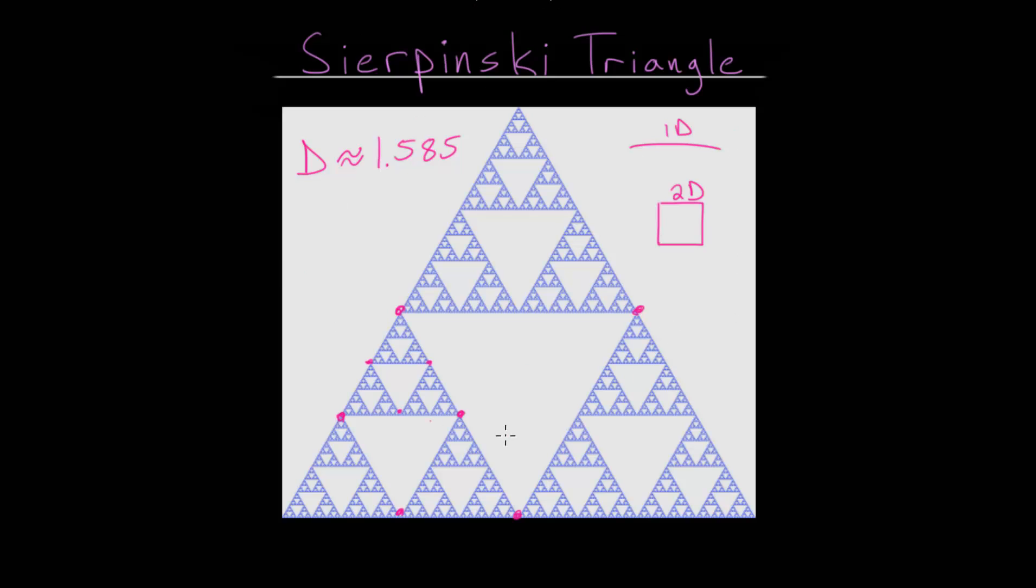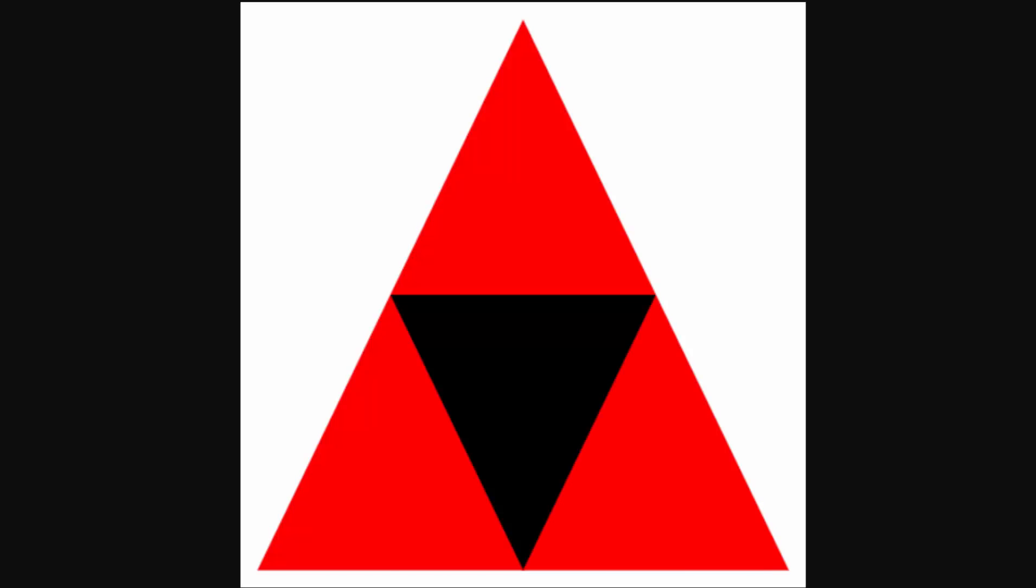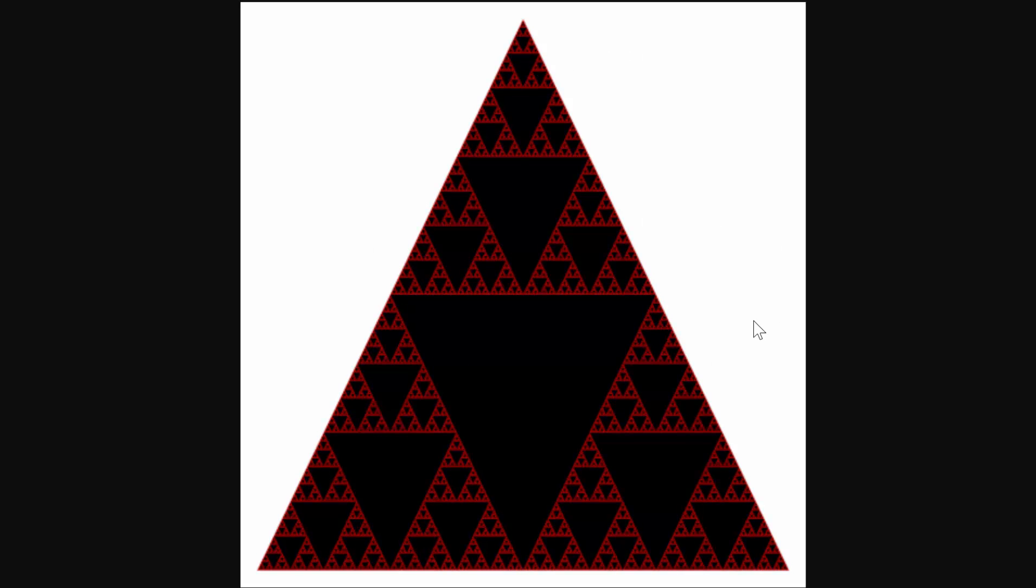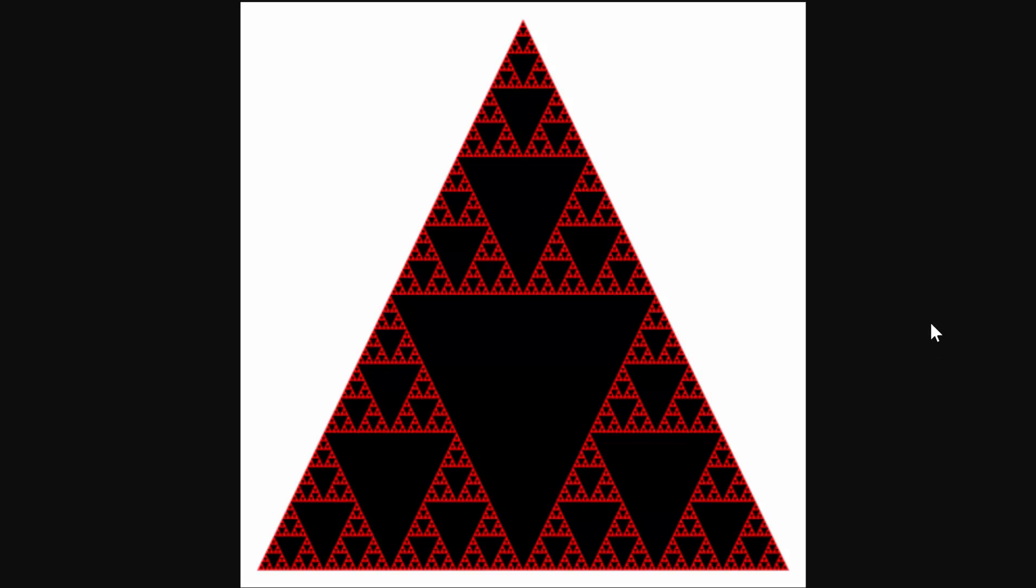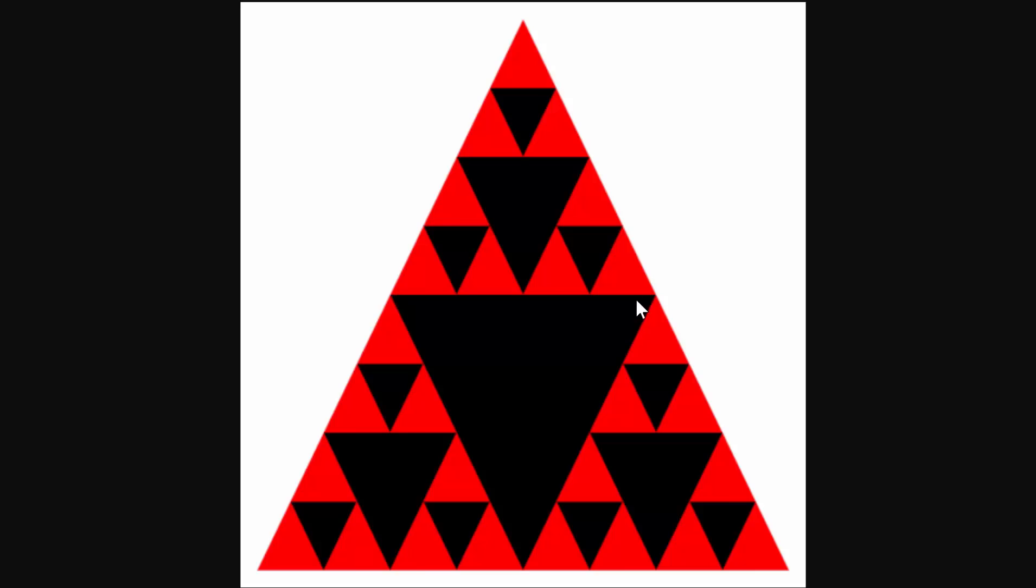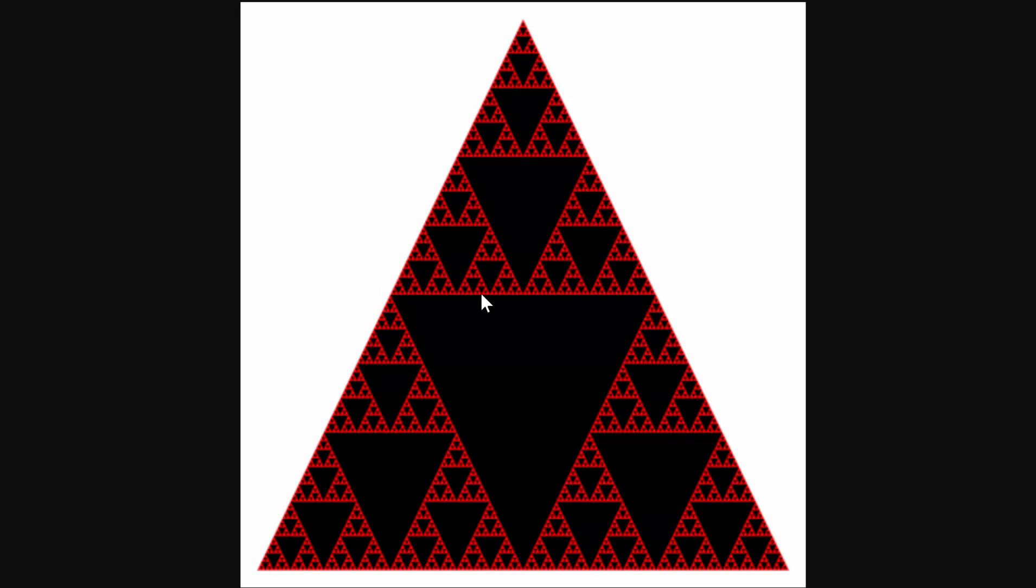Now let's look at an animation of how this triangle is formed. And as you can see, the original triangle starts in red, and then the black triangles are removed. Now we went through the process. It's all about finding these midpoints, connecting the lines, and then removing the middle triangle.